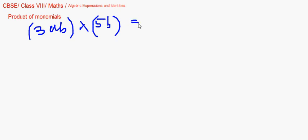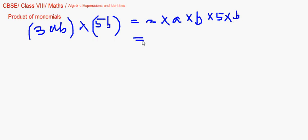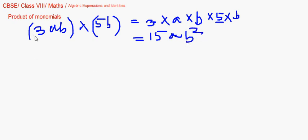If I expand this and write each factor separately, it becomes 3 × a × b × 5 × b. The constants: 3 and 5 give 15. The variable a remains alone. But b appears twice, so b × b gives b². So the answer is 15ab².